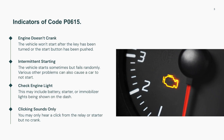Symptoms to watch for. Signs of code P0615 are usually noticeable right away because they affect your ability to start the vehicle. One of the most obvious signs is that the engine won't crank at all when you turn the key or push the start button. You may hear a click when trying to start the car, or you may hear nothing at all, depending on where the failure is occurring.